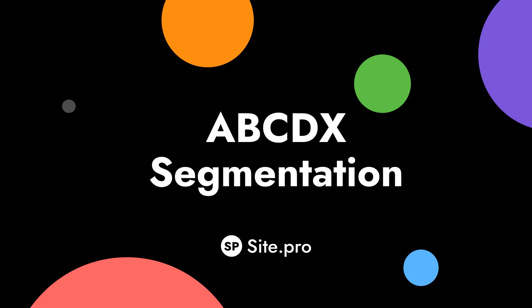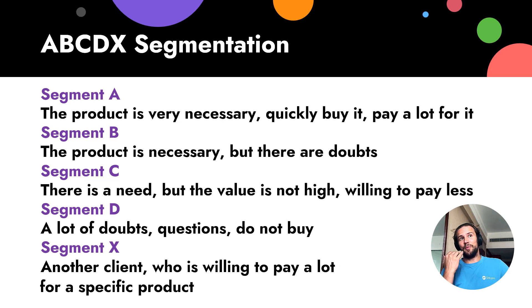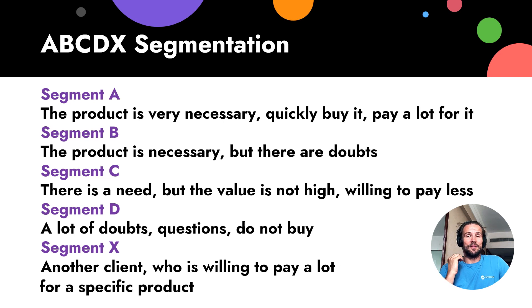Let's talk about OpsetX Segmentation. There are five segments of customers. Segment A — these are people who pay a lot, pay on time, do not have specific requirements, and are usually very satisfied with the product.